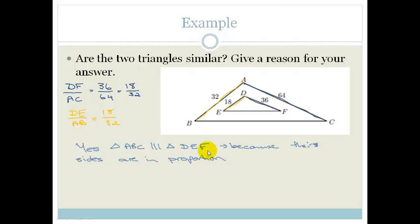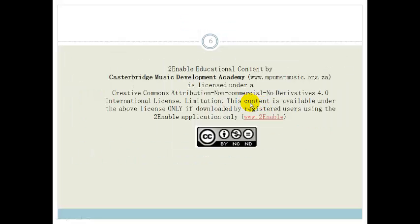Okay, nice and easy. So if they're similar, their sides are in proportion. If their sides are in proportion, then they are similar. Right, grade 10s, that's all it is for similar triangles. It really isn't that tricky.